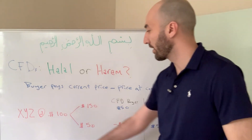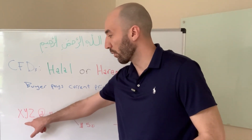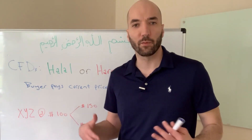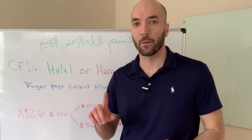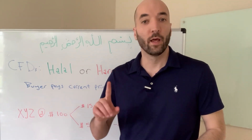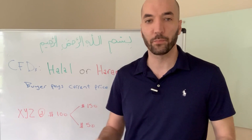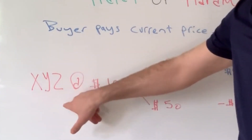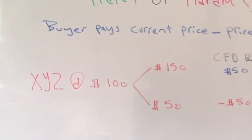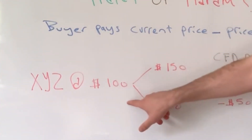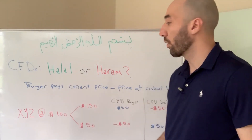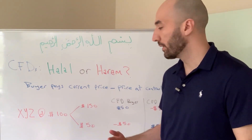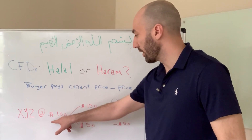Let's look at an example. CFDs can be used for almost anything — stocks, commodities, or currencies. In our example, we'll look at a CFD written on a stock, specifically XYZ stock. Currently it's trading at $100 per share, so at the time the contract for difference is being written, the price of XYZ is $100.